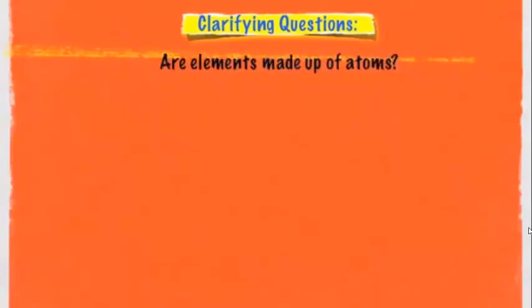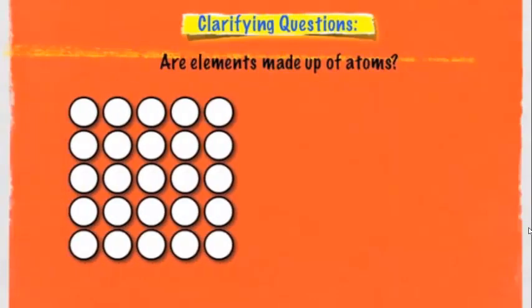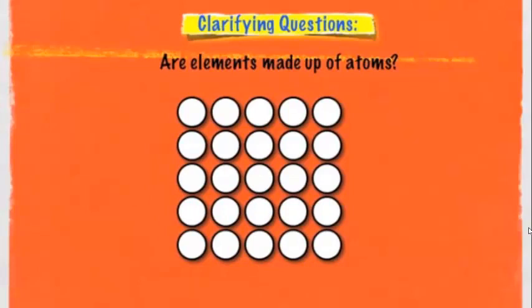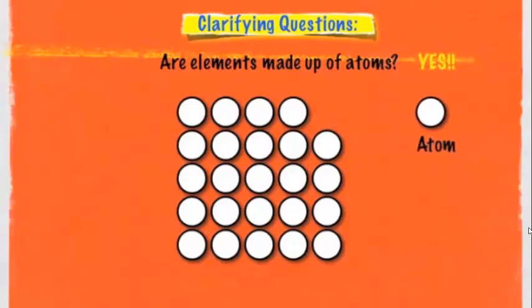Here are a few questions to help clarify the similarities and differences between atoms and elements. The first question is: are elements made up of atoms? Well, here are the elements we just saw. Is this element made up of atoms? Obviously yes — there's the atom. So, elements are made up of atoms.